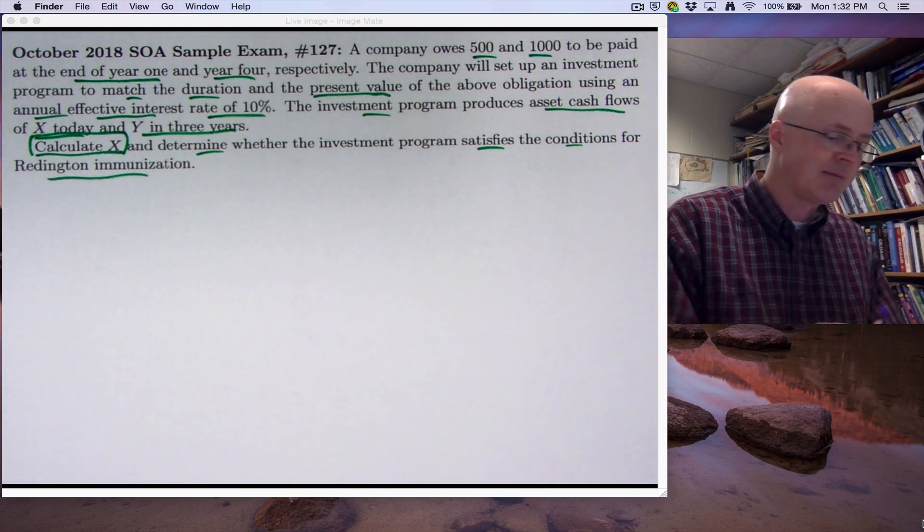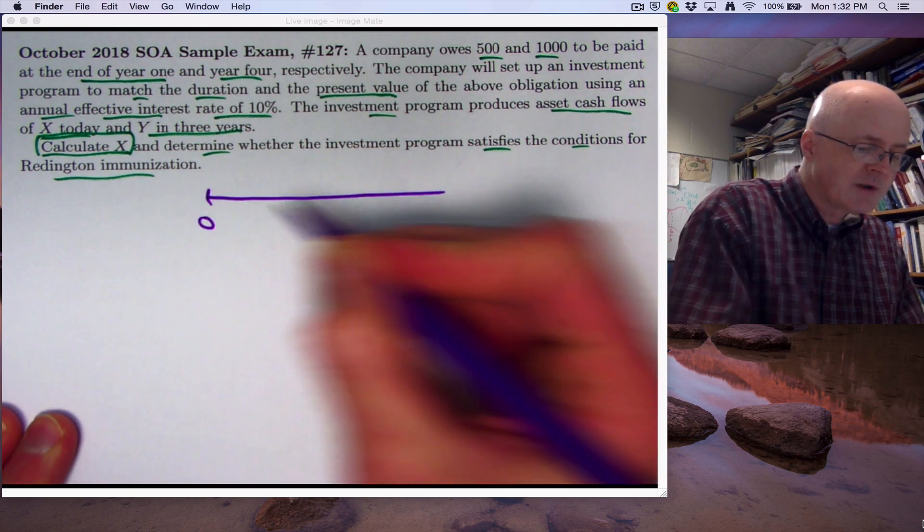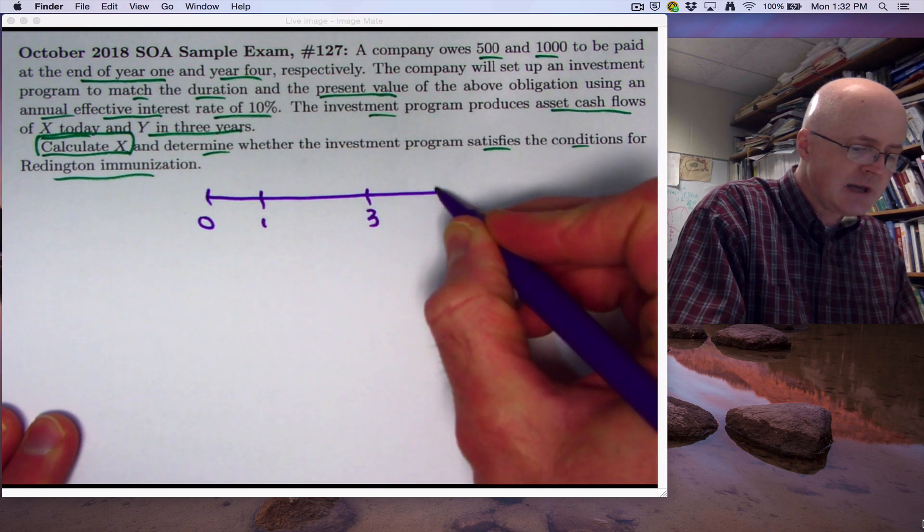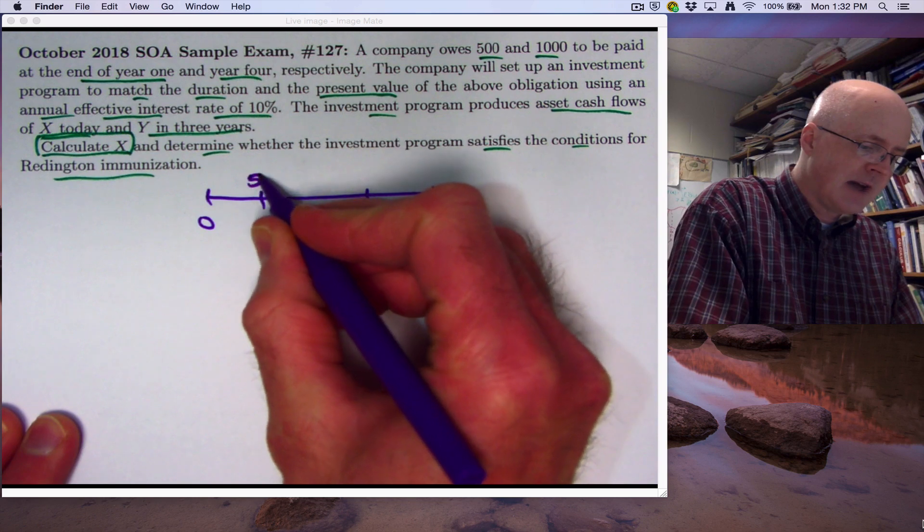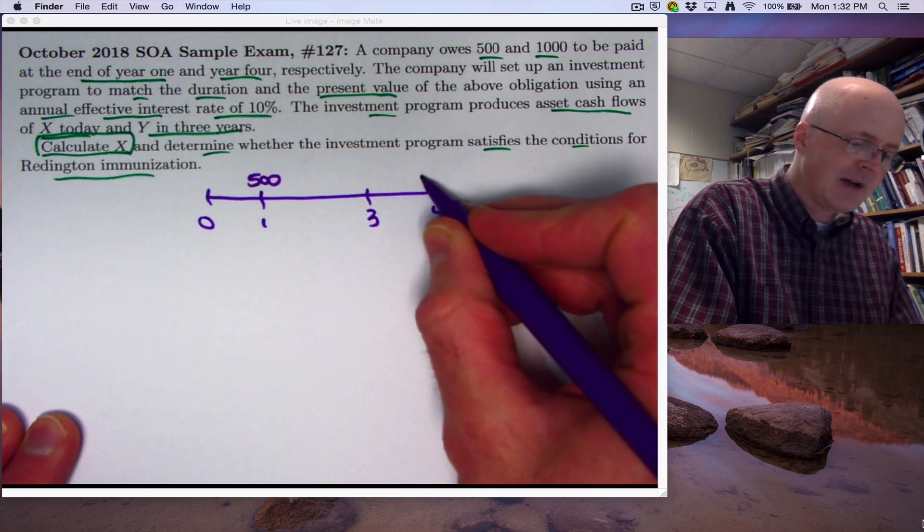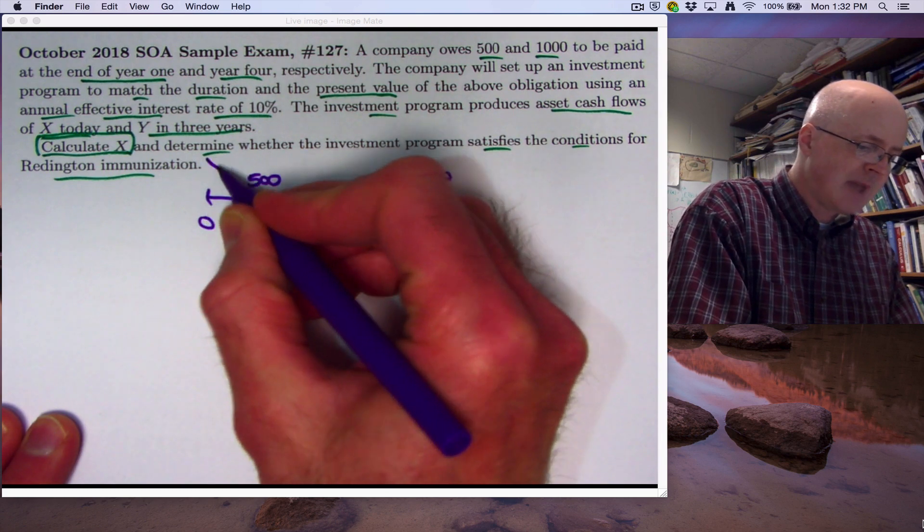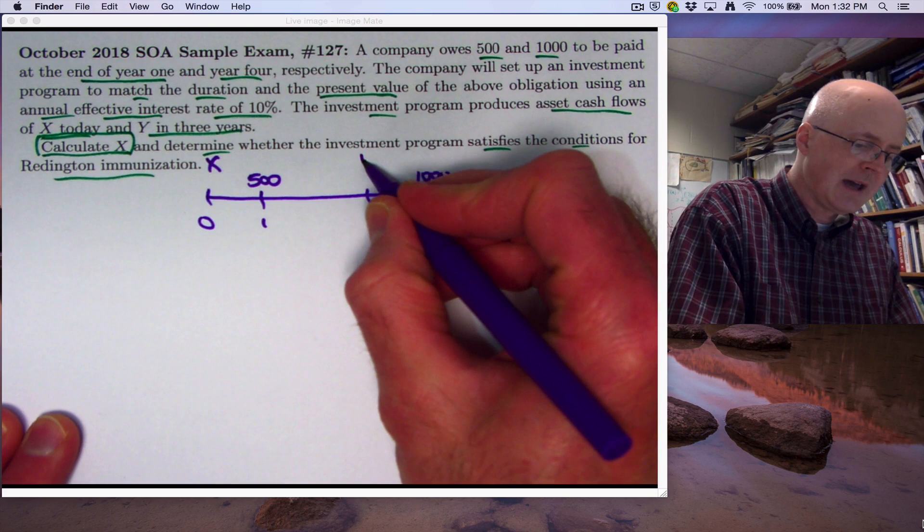So Reddington immunization or full immunization is not always achievable. It is ideal, you might say, but maybe adjustments can still be made in real life. All right, let's set up our time diagram. So our important times here are time zero, time one, time three, and time four. We'll put the liabilities closer to the line here, 500 at time one and 1,000 at time four. And then x is paid now, that's an asset, so I'm going to put it higher, at time zero and y at time three.